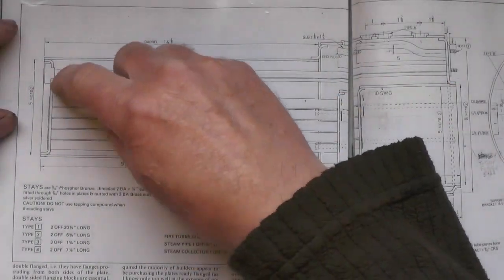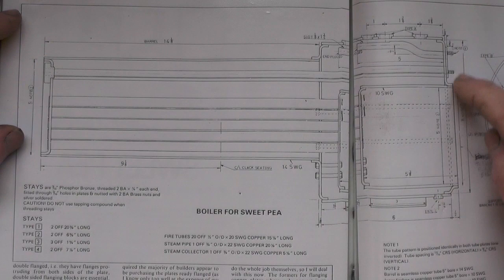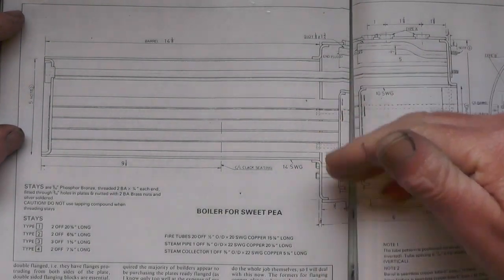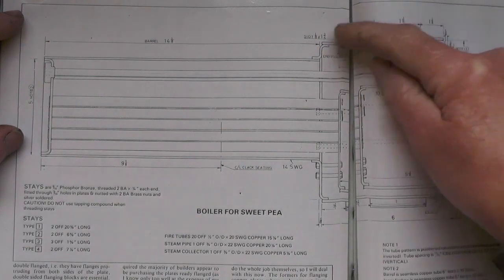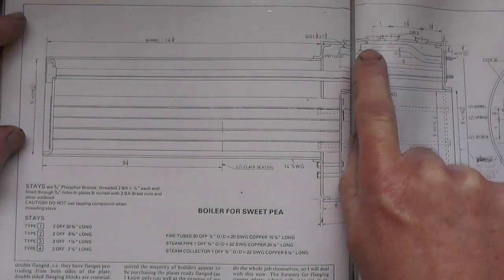For anybody that doesn't know what I'm talking about with wet header, let's go back another step. In the boiler, this type of boiler I'm doing is a marine boiler. The water heats up, the steam collects in this part of the top of the boiler, and then this tube here is the pickup tube for the steam.